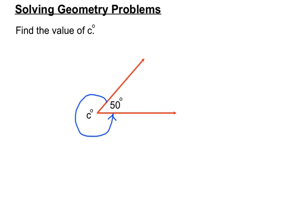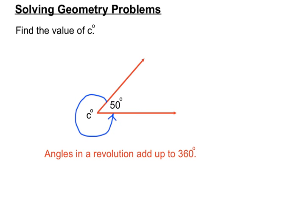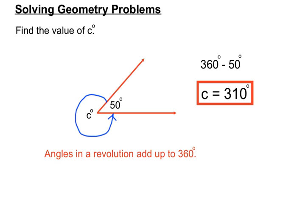Here we have two angles — the 50 degrees and the C degrees. Can you see that a combination of the 50 degrees and the C degrees make up one full revolution? If we start from one arm of the angle, we go around 50 degrees and go around C degrees, making one full revolution. We'll use the rule that angles in a revolution add up to 360. We subtract 50 from 360 and we get C equals 310 degrees.